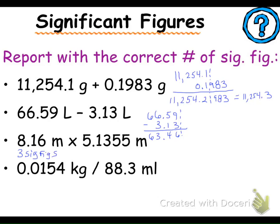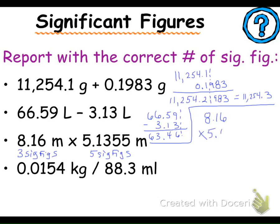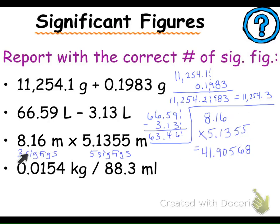For multiplication and division, identify the number of sig figs you have. In this case, one value has 3 sig figs and the other has 5 sig figs, so your answer cannot have more than 3 significant figures. Do your math first — 41.90568 is the total answer. To report it to the correct number of sig figs, knowing I can only have 3 significant digits, the correct reporting is 41.9, because that 0 isn't going to do anything to that 9.